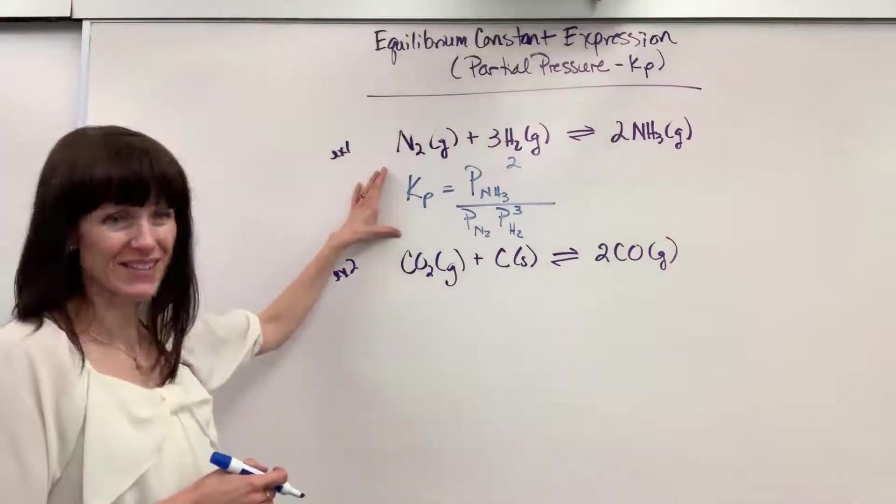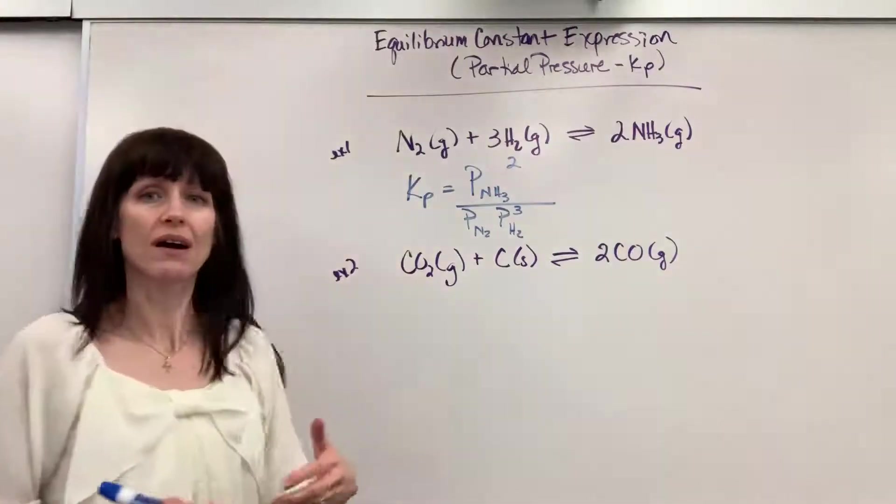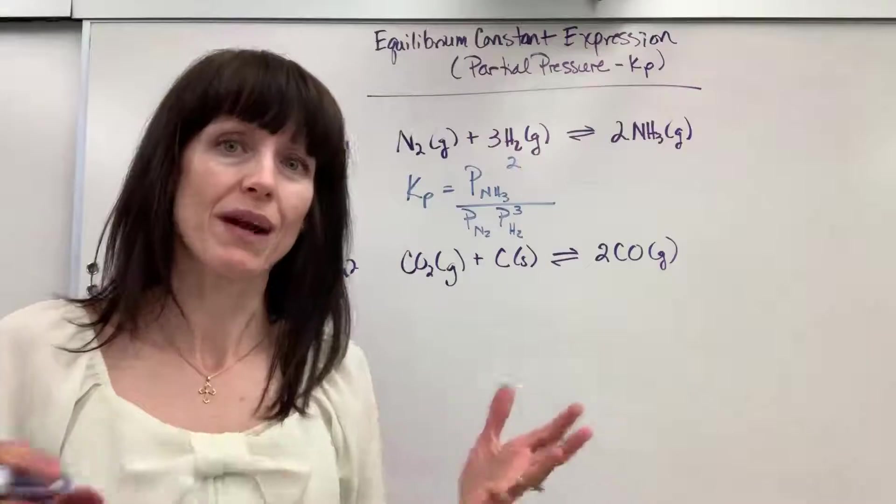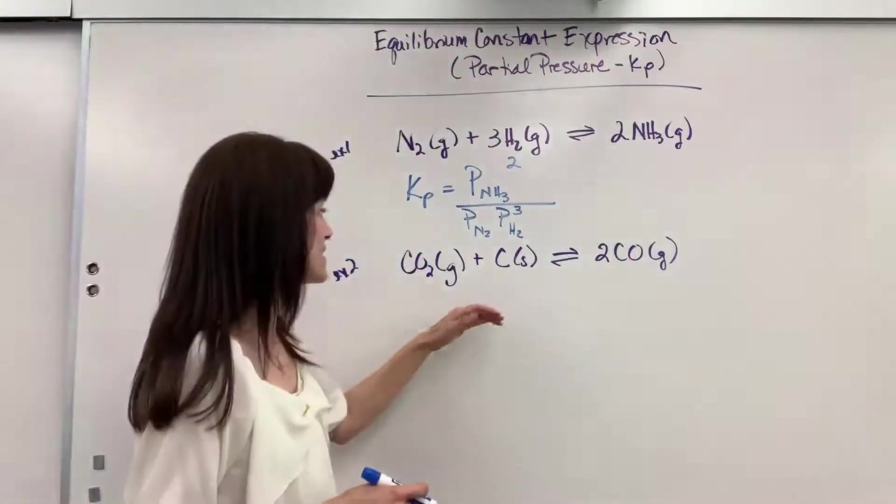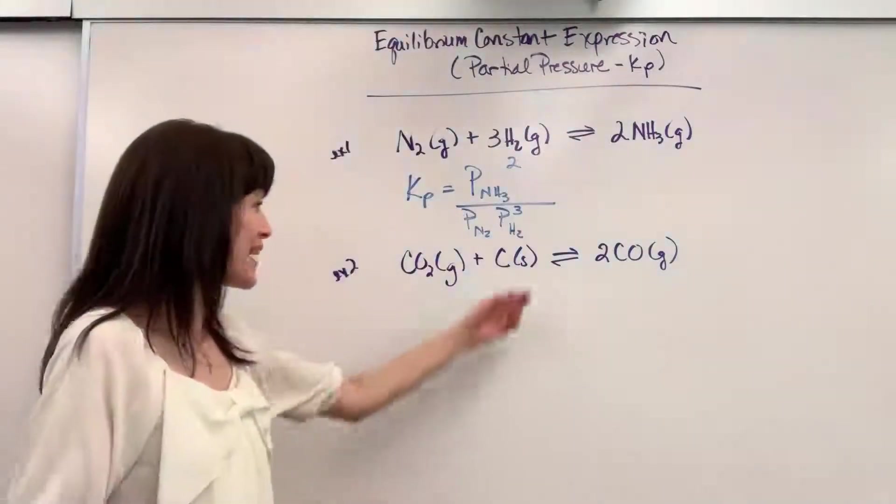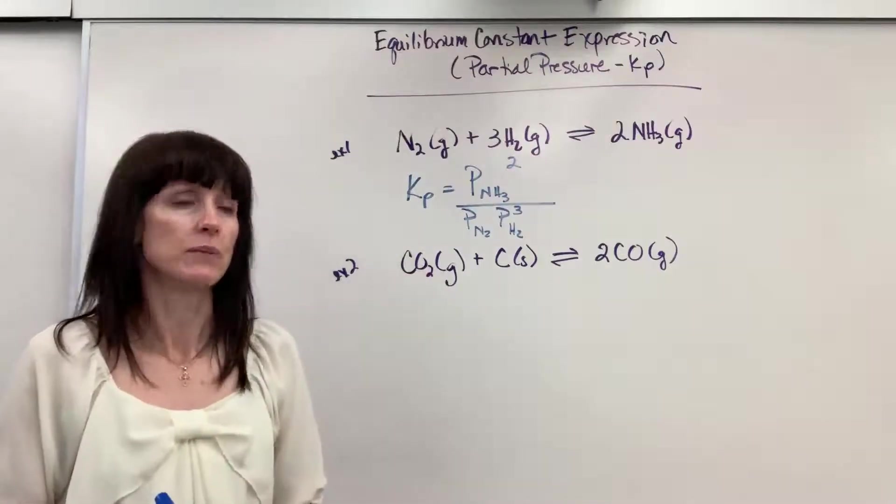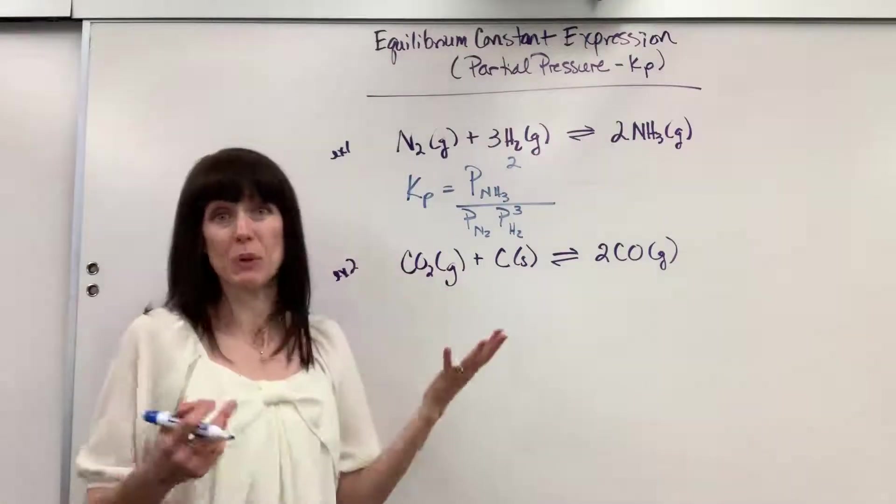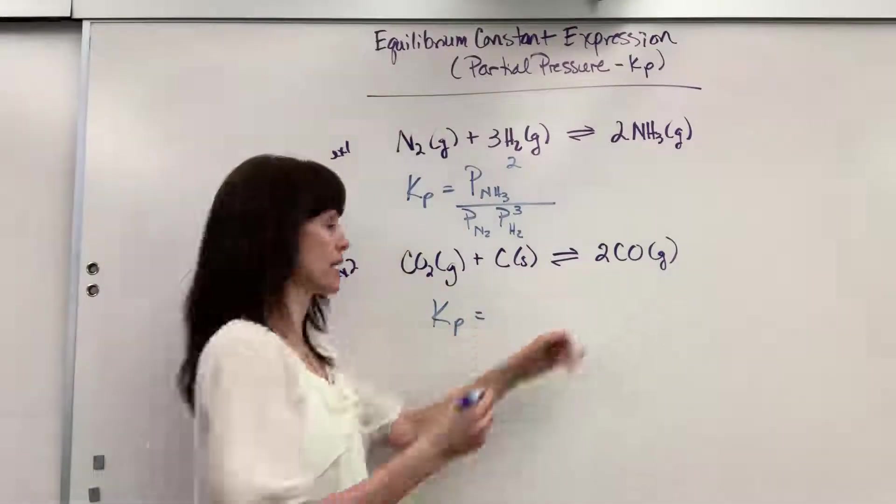So here's our second example. You'll recall that when we're writing our equilibrium expression, you can only use gas and aqueous. As I look at this, of course partial pressure will only be for gases, but I have a solid in here. We don't ever write solids in our equilibrium expression, so that simply won't be written.